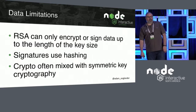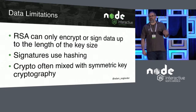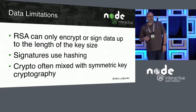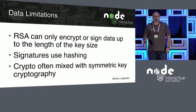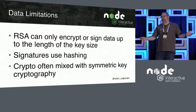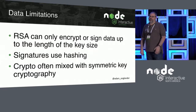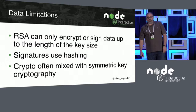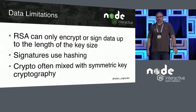RSA has data limitations — it can only encrypt or sign up to the length of the key size, which is problematic. If you have a 2048 key, you can only do 2K of data. Most transactions, that's fine; some transactions it may not be, which is why it's often mixed with symmetric key cryptography. If you've used Jose or JSON web encryption, you can use RSA to encrypt the keys you use for AES symmetric encryption. So you create random keys and IVs, encrypt your data using AES — which is very fast and handles large amounts of data — and then encrypt the key and IV using RSA so you have a different key and IV every time. Signatures use hashing, so if the data you're signing is larger than the key size, it's going to hash it so it can fit.